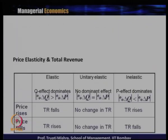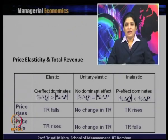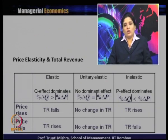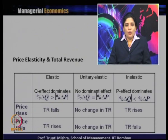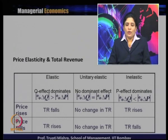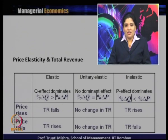Summarizing the relationship between price elasticity and total revenue: in elastic demand, the Q effect dominates because quantity demanded changes more than price. In unitary elastic demand, there is no dominant effect since percentage change in price equals percentage change in quantity. In inelastic demand, the P effect dominates because change in quantity demanded is less than change in price.